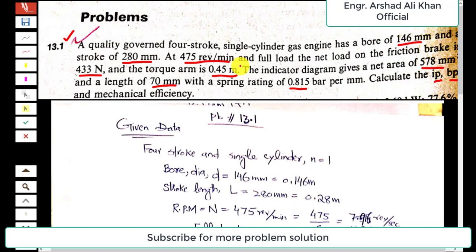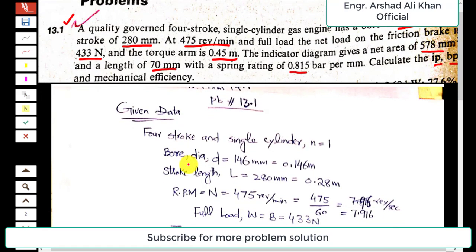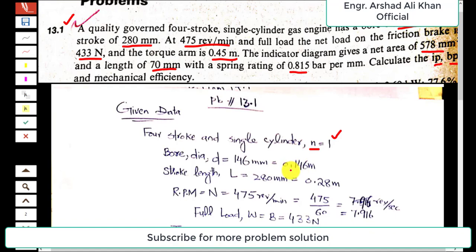The data extracted from the problem statement is as follows. It is a four-stroke, single-cylinder engine, so the number of cylinders, represented by small n, equals 1. The bore diameter, represented by small d, is 146 millimeters, which converts to 0.146 meters in SI units. The stroke length, represented by capital L, is 280 millimeters.